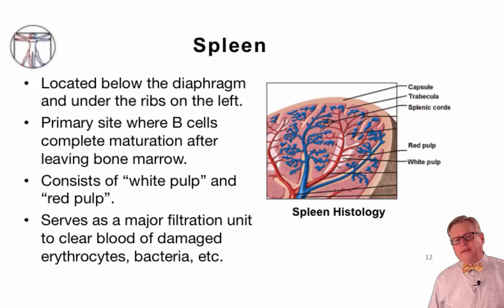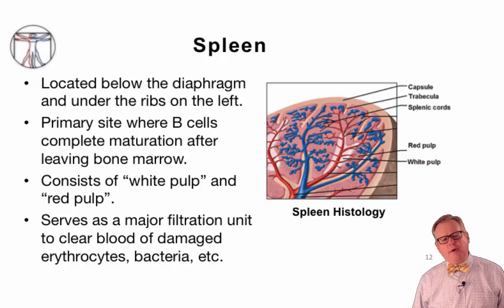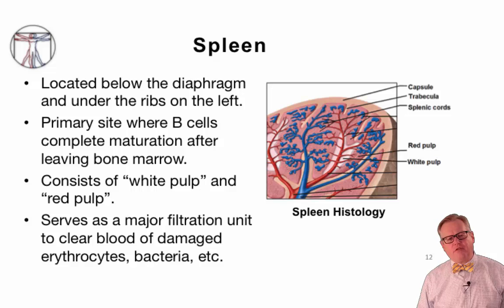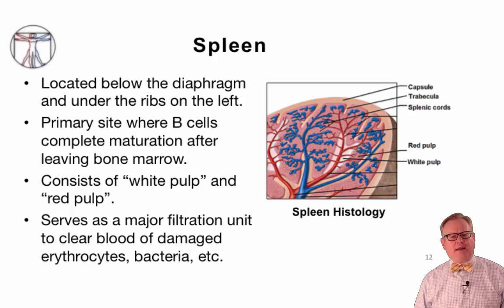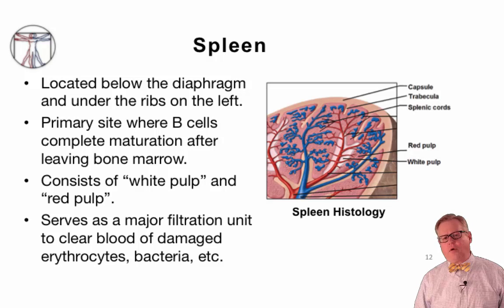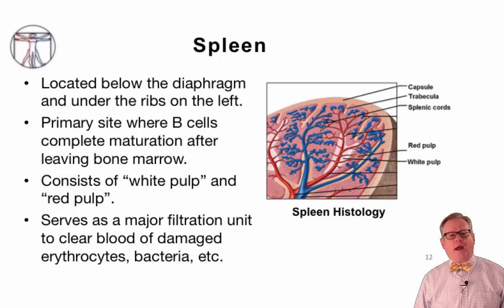One of the prominent secondary lymphoid organs is the spleen. The spleen is located below the diaphragm and under the ribs on the left-hand side of the body. It is the primary site where B cells complete maturation after they leave the bone marrow. The spleen consists of red pulp and white pulp. The red pulp serves as a filtration unit to clear the blood of damaged cells such as erythrocytes and bacteria, acting as a sieve to capture pathogens. The white pulp contains the sites where all lymphoid cells reside and interact in the spleen.